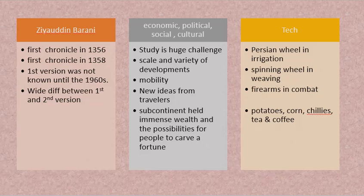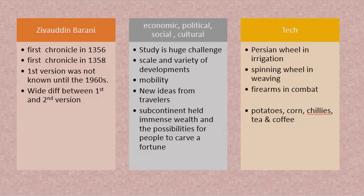Ziauddin Barani wrote a chronicle in 1356, then another in 1358. The first version was not known until 1960 — so until then, people read only the 1358 chronicle and believed that was fact. There is a wider difference between the two versions. What he wrote in 1356 was based on information available at that time, but he changed a lot in the 1358 version because he had gained access to much more information about the past between 1356 and 1358.